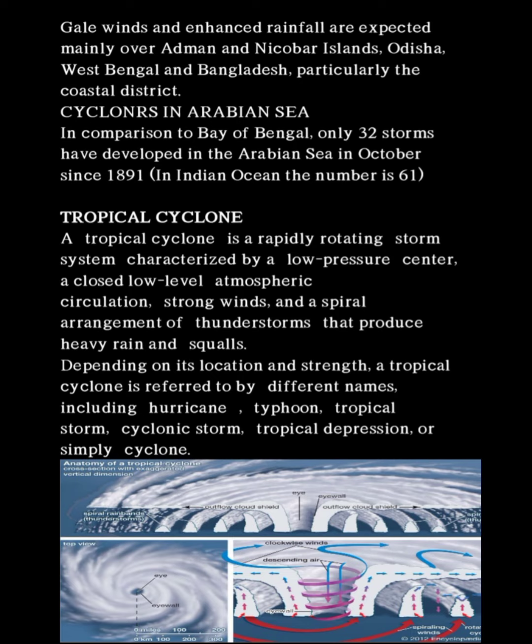Depending on its location and strength, a tropical cyclone is referred to by different names including hurricane and typhoon. A hurricane is a strong tropical cyclone that occurs in the Atlantic Ocean. A typhoon is a mature tropical cyclone that develops between 180 degrees and 100 degrees east in the northern hemisphere.